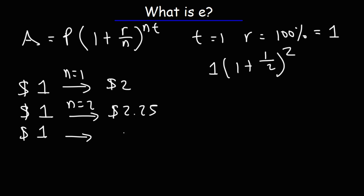Now, instead of being paid the 100% interest twice a year, what if it was broken up into 4 times a year? Let's say if you receive quarterly payments. In this case, n would be 4. So it's going to be 1 plus 1 over 4 raised to the fourth power. At the end of the year, you'll have $2.44.